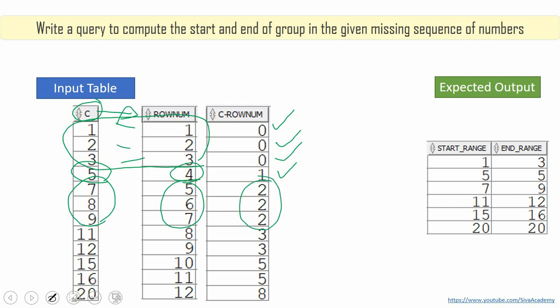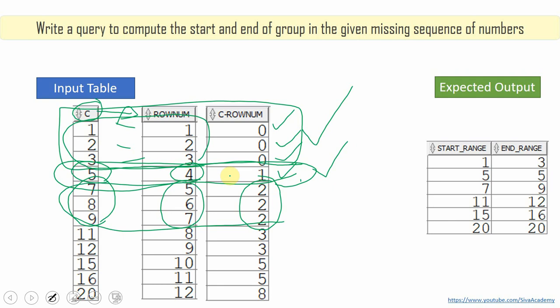See, the intention here is that now we are able to find the group. If you see clearly, so this forms one group that is, you can say group 0. Similarly, here is another group that is, let's say group 1. Similarly, 7, 8, 9 falls into another group, nothing but group 2.